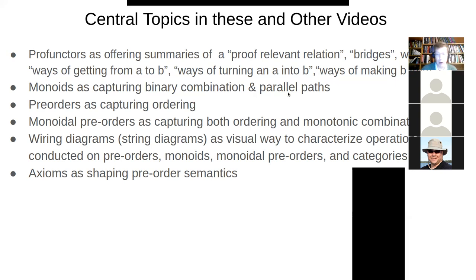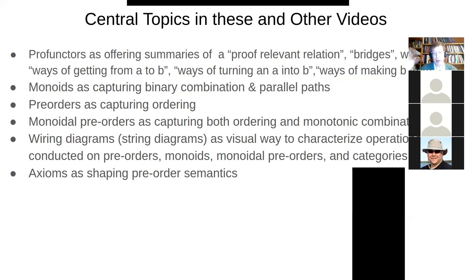Pre-orders will capture ordering, closely tied to the notion of a poset — a partially ordered set — where they just differ in the sense that one collapses things that are isomorphic: if A is less than B and B is less than A, then A equals B. Monoidal pre-orders will capture features of both and capture monotonic combinations. While monoids capture binary combination, they don't capture ordering between things, but with a monoidal pre-order we have ordering and the binary operation A⊗B has this nice property of being monotonic: if (A, B) ≤ (A′, B′), then A⊗B ≤ A′⊗B′.